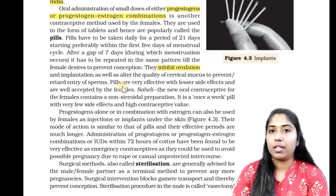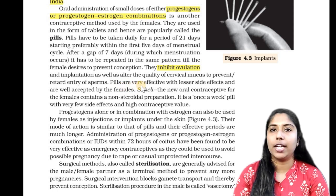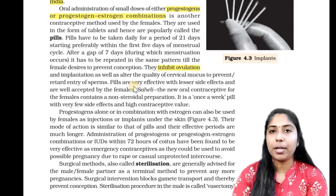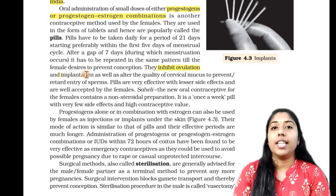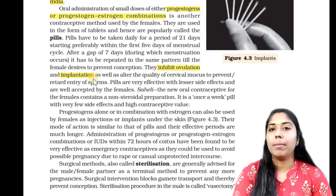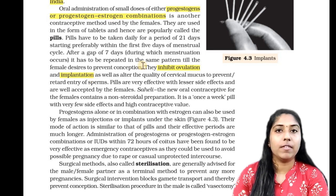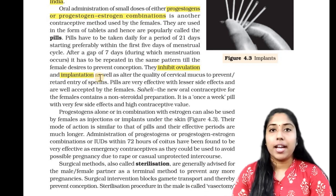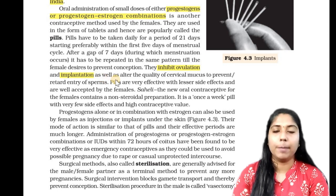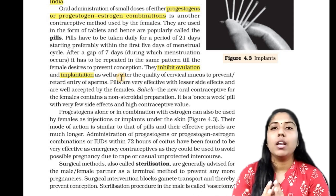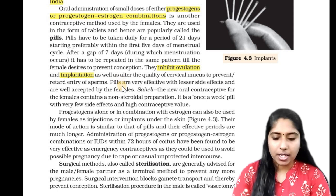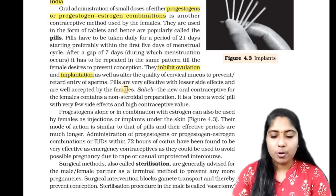The uterus inner wall — the inner layer — we call it the endometrium. In that endometrium, there is no implantation. The embryo cannot attach to the endometrium. That attachment is not made to the endometrium — there are changes in the uterus endometrium that make it unsuitable for implantation.